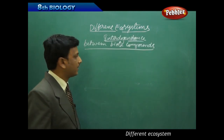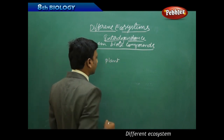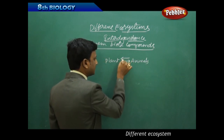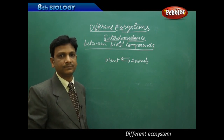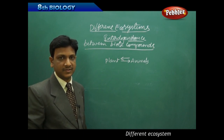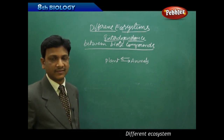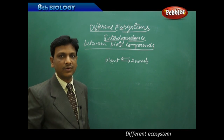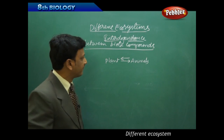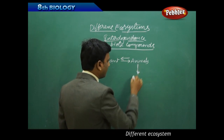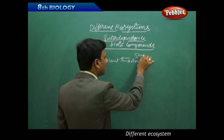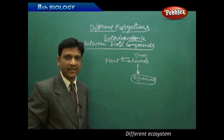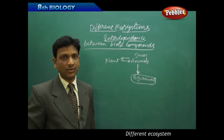Let us see the interdependence between biotic components. A plant is dependent on animals in an ecosystem, and animals are dependent on plants — an animal may eat the plant to get its food, or depend on it for oxygen. In the same way, a plant may depend on animals for carbon dioxide. Plants and animals living in an ecosystem are dependent on one another — either for food, for oxygen, or for carbon dioxide. Even different animals are interdependent; small animals are eaten by big animals.